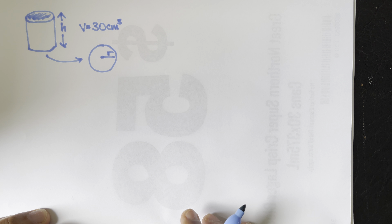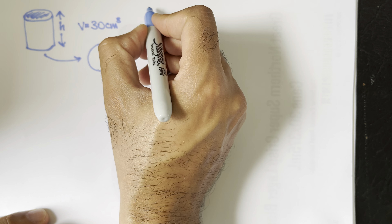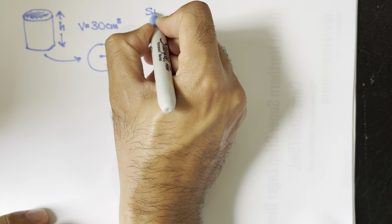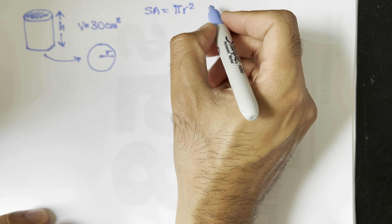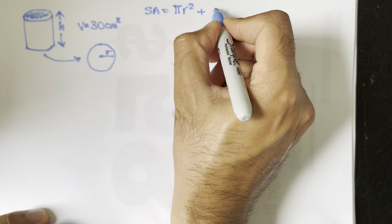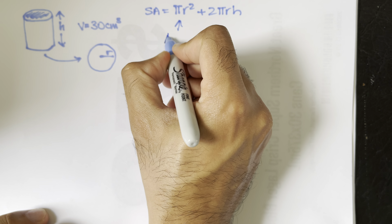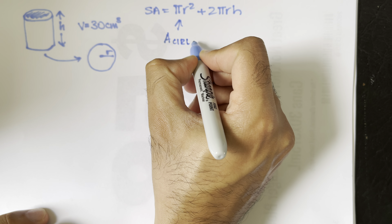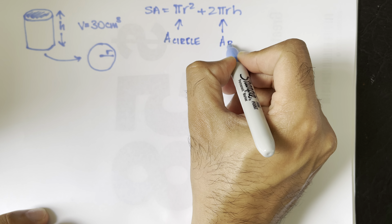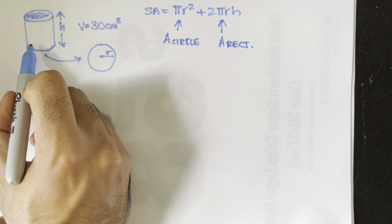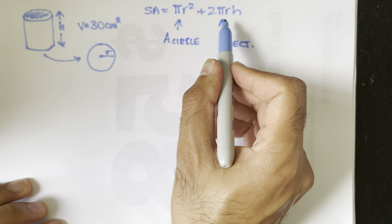Minimizing material involves the surface area. The surface area equals πr² for the circle base, added to 2πrh for the rectangular face of the can — that's the area of the circle plus the area of the rectangle.